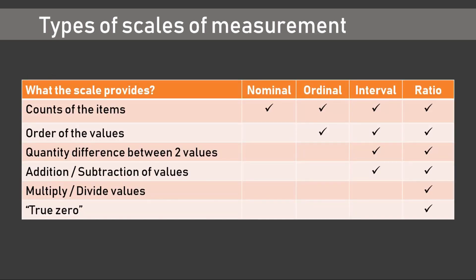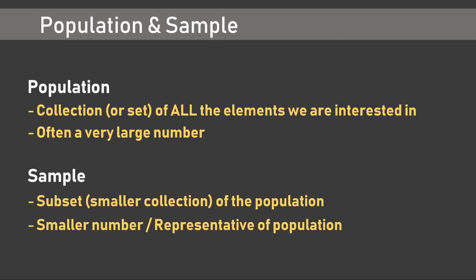A quick summary reveals that each scale of measurement is progressively a better option over the previous one. This brings us to the last terms in our list: population and sample. Population is a collection or set of all the elements we are interested in — it is often a very large number, like the population of a country or planet Earth. Sample is a subset or smaller collection drawn from this population, and it is most often taken as a representative of the population.